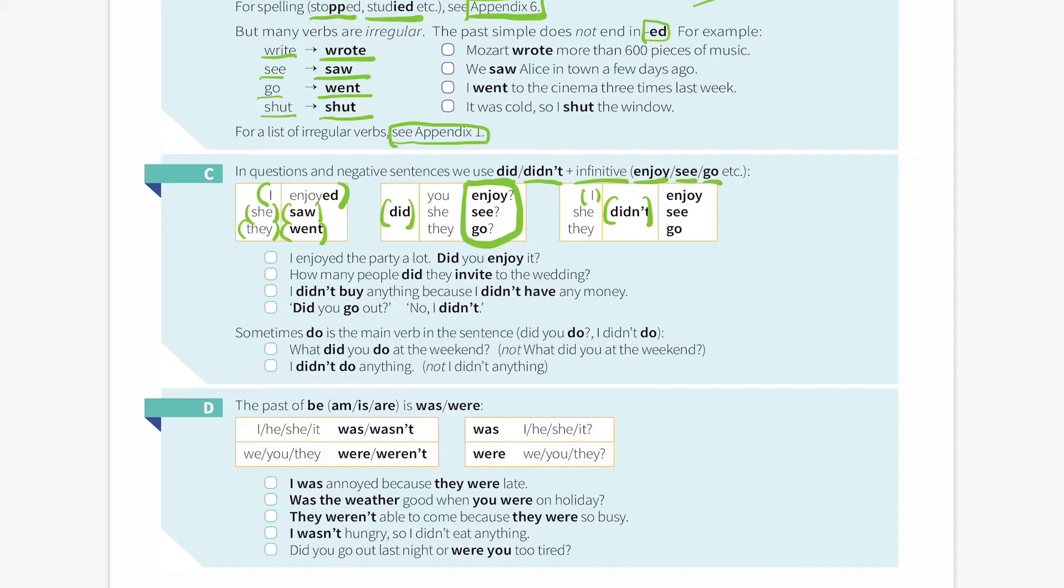And I didn't. I didn't enjoy that. I didn't see that. I didn't go. So for example, I enjoyed the party a lot. Did you enjoy it? How many people did they invite to the wedding? I didn't buy anything because I didn't have enough money. Did you go out? No, I didn't.